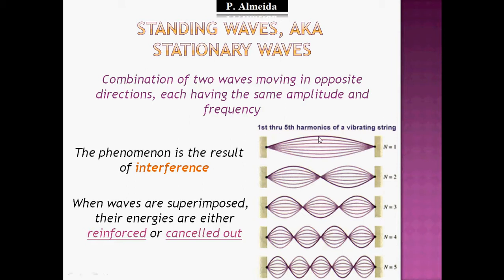Points where you see the maximum amplitude are points of reinforcement, and they will get a name. Points where you have the minimum or zero are points of cancellation — when the waves are out of phase, or when the waves would be out of phase if they were superimposing each other.